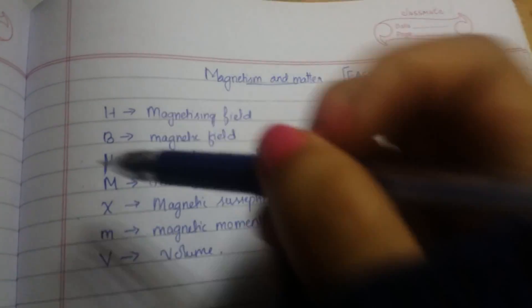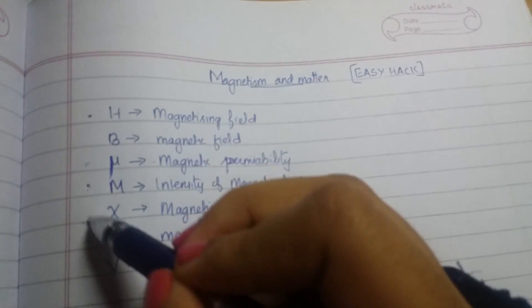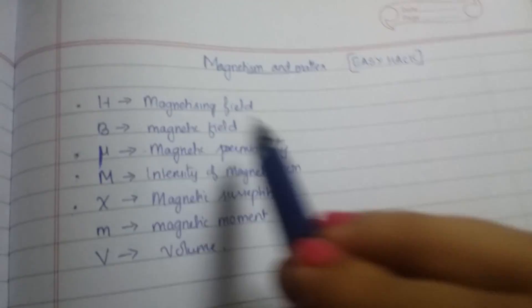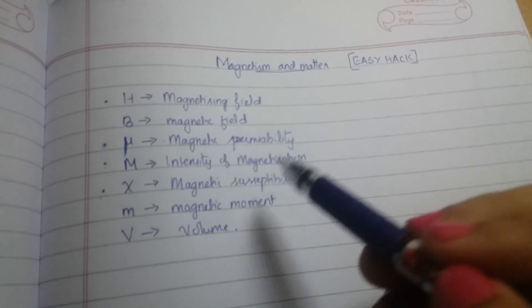So I am going to teach you the formula for H, Mu, M, Chi. That is magnetic field, magnetic permeability, intensity of magnetization and magnetic susceptibility. So, here we go.